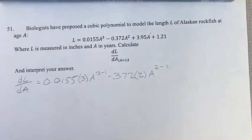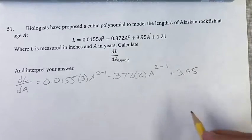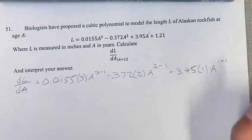If we think of this as A to the first power, we can do the same thing. 3.95 times one is your exponent, with your new exponent being one minus one.